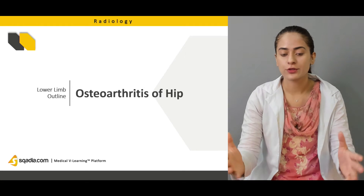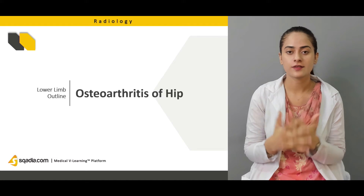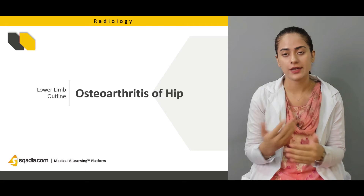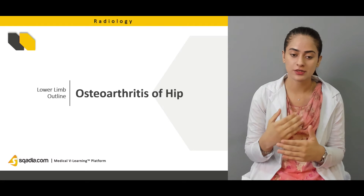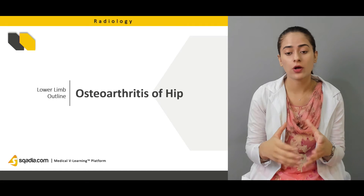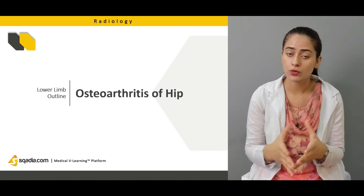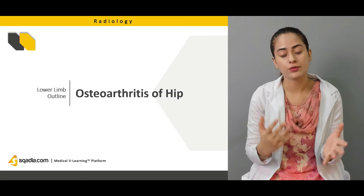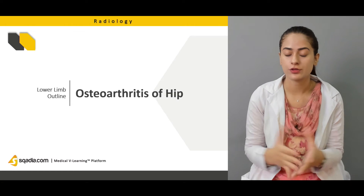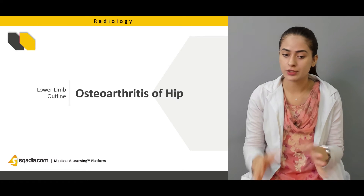Now for the true chronic conditions: osteoarthritis — the degenerative joint disease of the hip. We're going to see how it appears on radiograph, as we've been discussing osteoarthritis in past lectures covering the shoulder, elbow, and wrist. Here we're going to discuss how osteoarthritis appears specifically at the hip joint.